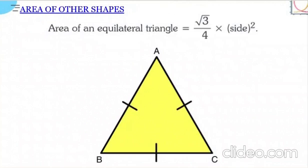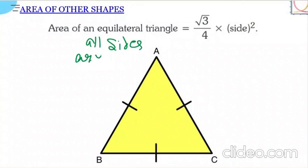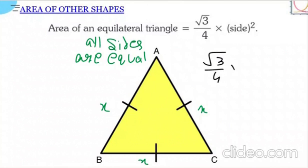Now let's look at the area formulas for other shapes. First, the equilateral triangle — we could apply Heron's Formula here too, but there's a dedicated formula. Since all sides are equal (each side x), the area of an equilateral triangle is √3/4 × x².